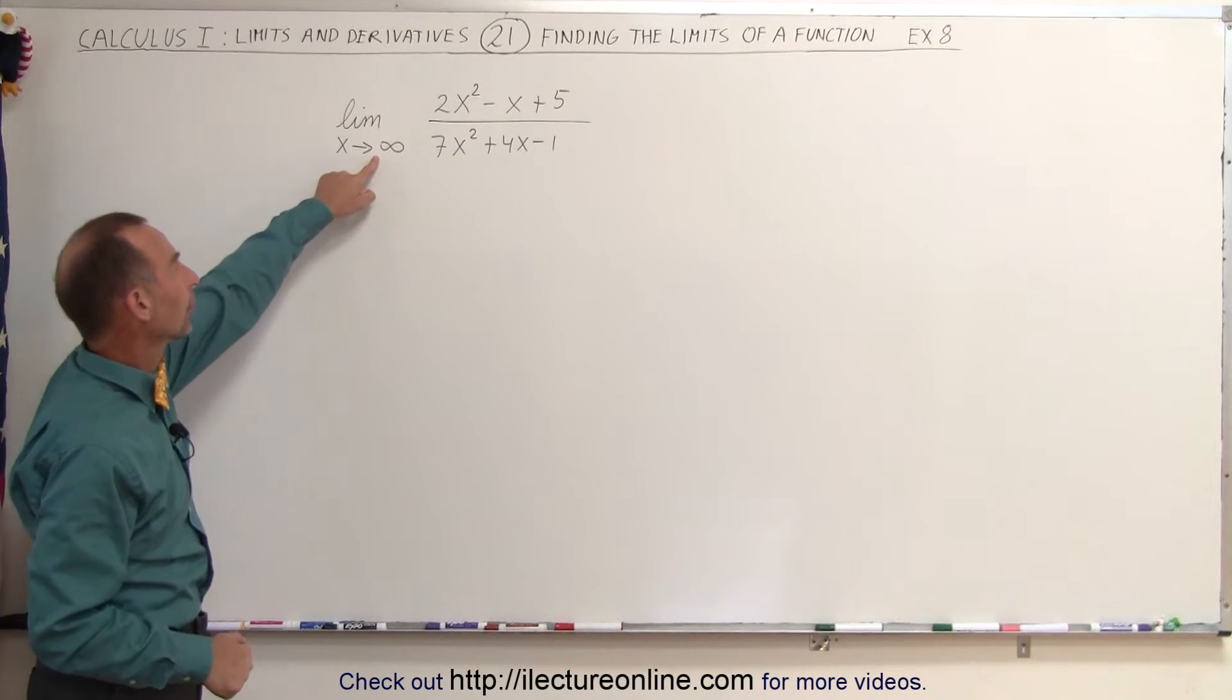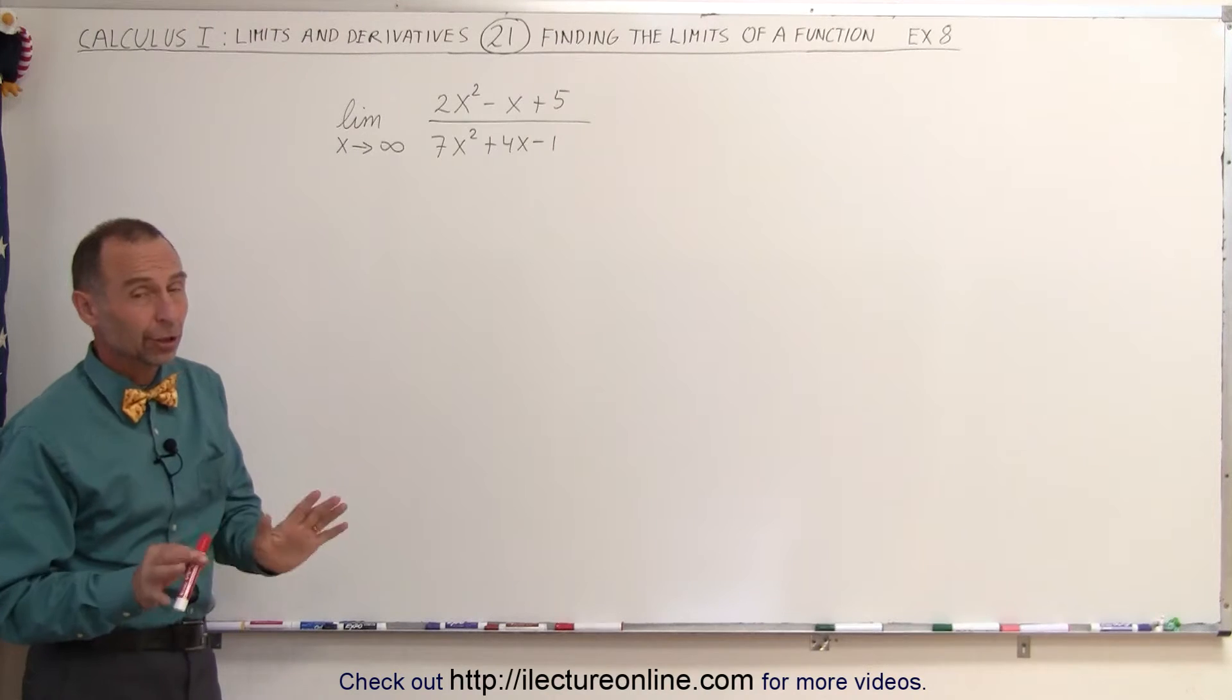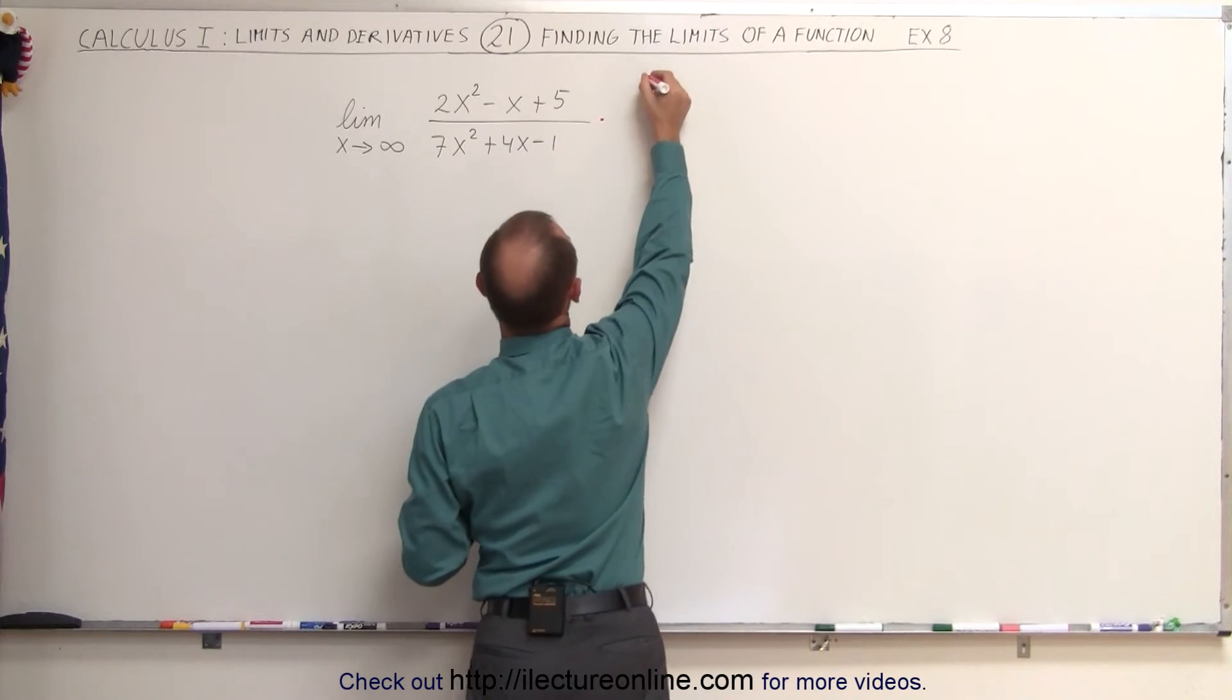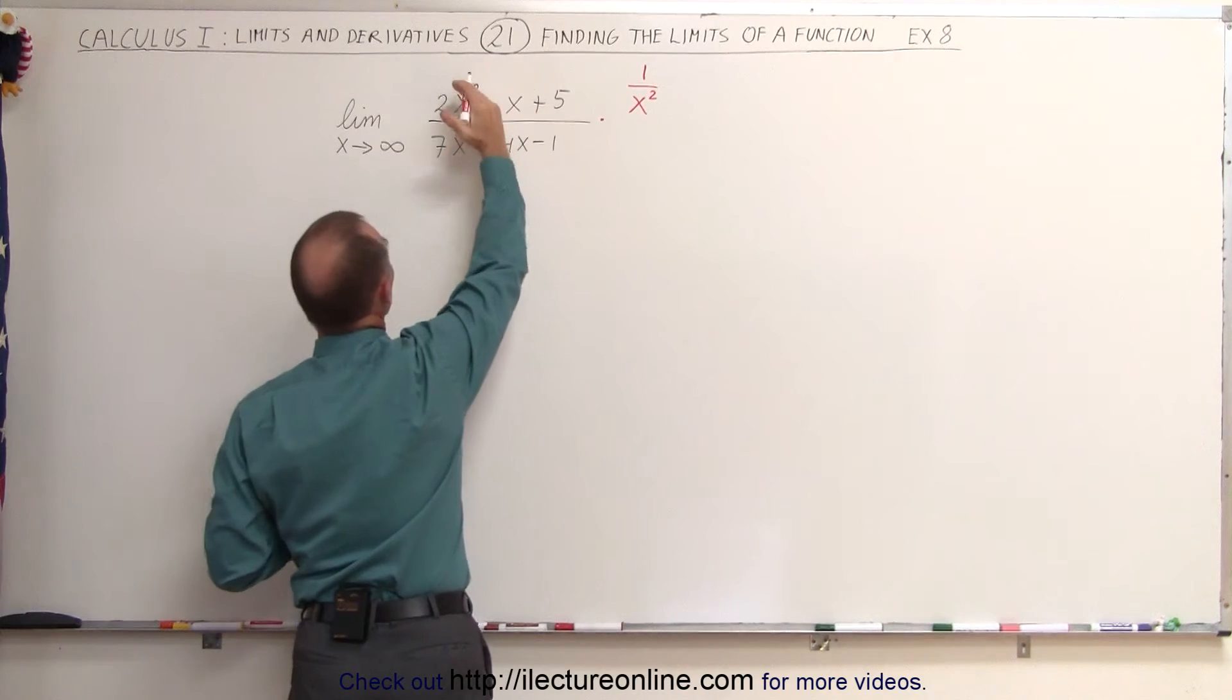Again, when you plug in infinity in the numerator and denominator, you end up with infinity squared divided by infinity squared. You don't want to do that, so you're going to multiply both the numerator and the denominator by 1 over x to whatever exponent you need in order to get all the x's in the denominator.